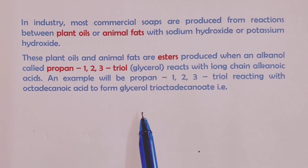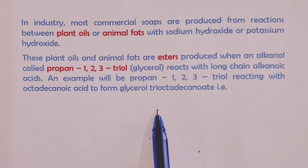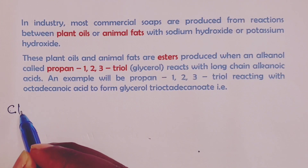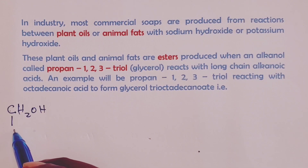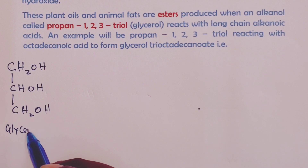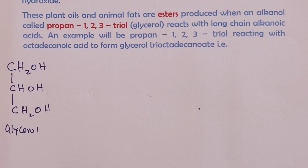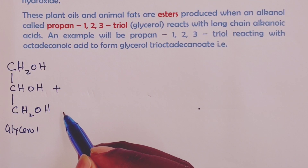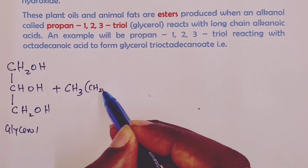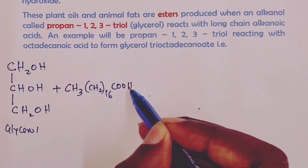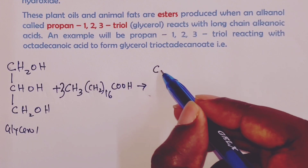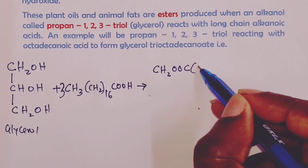Here we want to illustrate a process where propane-1,2,3-triol (glycerol) reacts with octadecanoic acid to form what we call glycerol tri-octadecanoate, which in this case is the fat. In terms of the equation, CH2OH linked to CHOH linked to CH2OH — which is glycerol — is reacted with three moles of octadecanoic acid, CH3(CH2)16COOH.